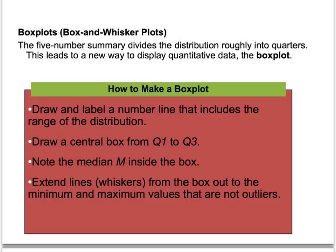The five-number summary allows us to make box and whisker plots. It's a way to pictorially represent each of those five numbers to show how the data is spread. To make a box plot, draw a labeled number line covering the range of the distribution. Draw a box from Q1 to Q3, then draw a line inside the box representing the median. Extend lines called whiskers from the box out to the minimum and maximum values that are not outliers. Outliers get their own separate mark.